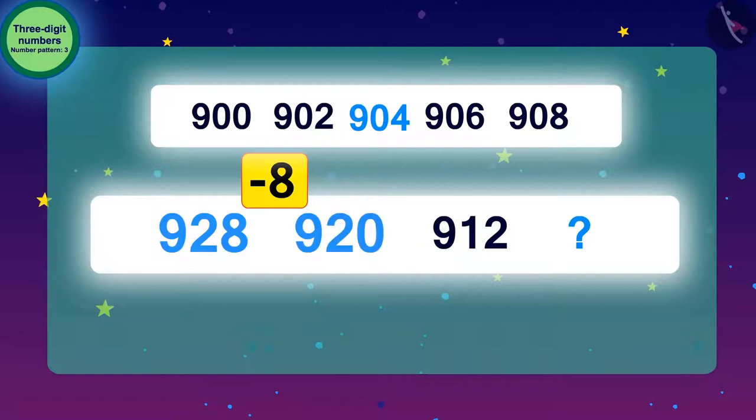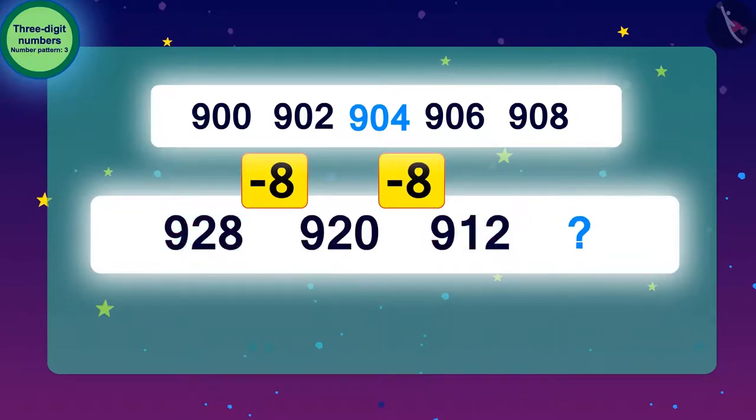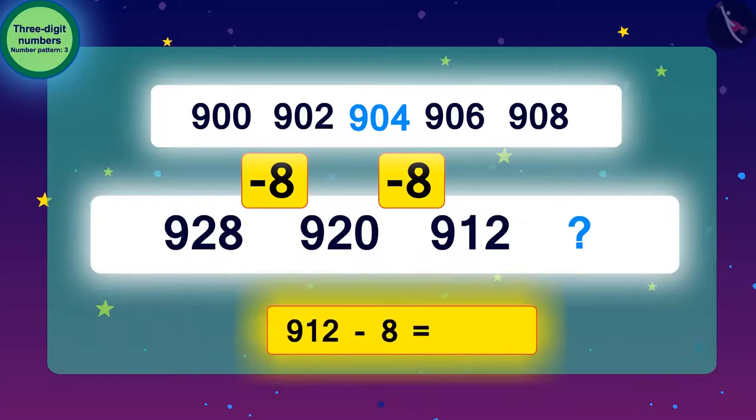Now, to go from 920 to 912, we have to subtract 8. Similarly, to find the next number of this number pattern, we have to subtract the number 8 from every number.